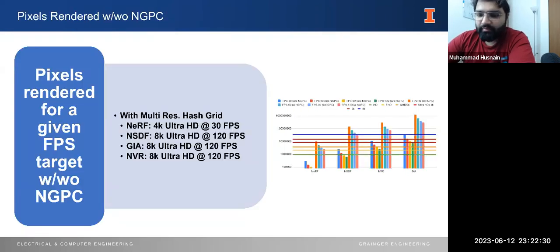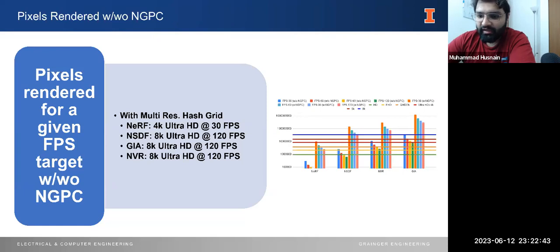Finally, let's observe the impact of NGPC on rendered pixels. With NGPC, we can achieve impressive results. For example, rendering NeRF at 4K Ultra HD resolution can reach 30 frames per second, while NSDF, GIA, and NVR can achieve 8K Ultra HD resolution at 120 frames per second.